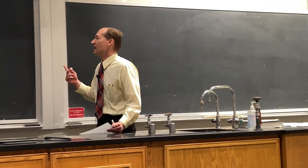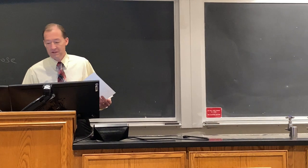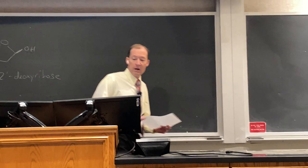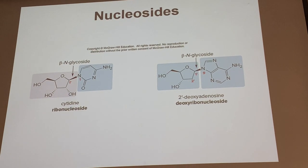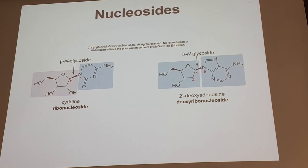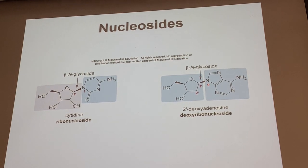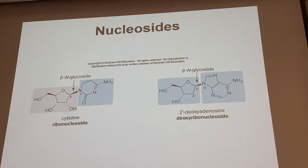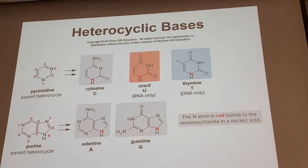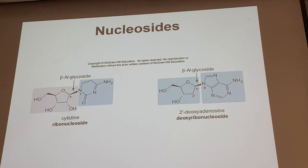Before the third component, when we combine our heterocyclic bases and our monosaccharides, we get something known as a nucleoside. There's a lot of vocabulary in this nucleic acids chapter. A nucleoside is simply an N-glycoside — you learned about N-glycosides at the end of our carbohydrate chapter. A nucleoside is an N-glycoside between either ribose or deoxyribose and one of those five aromatic heterocycles, and they are always beta in our nucleic acids.